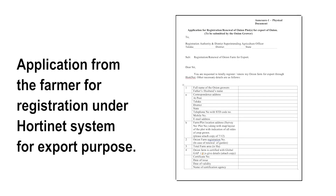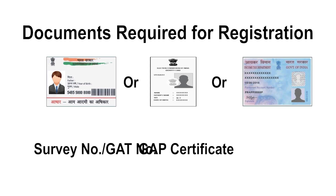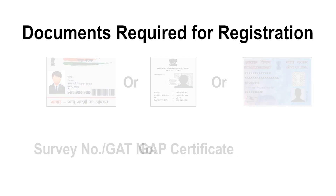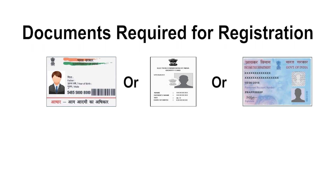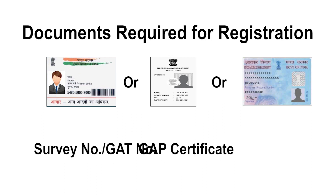Regarding the application from the farmer for registration under the Horti-Net system for export purposes, the documents required for registering the farm are: first, only one ID proof is required — either Aadhaar, Voter ID, or PAN — along with a copy of it. Second, the survey number or G80 number along with a copy of the same.